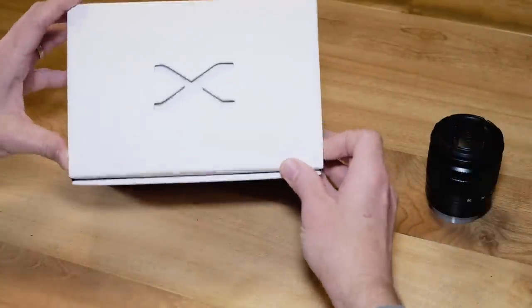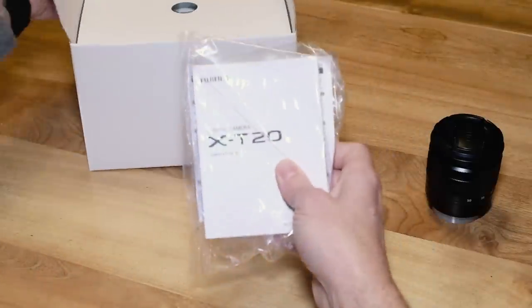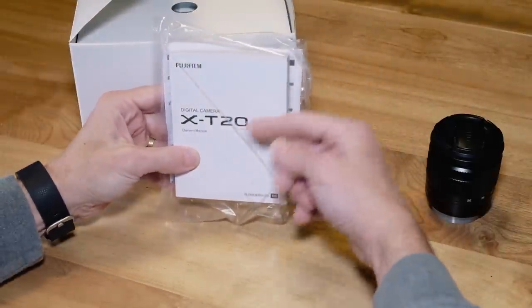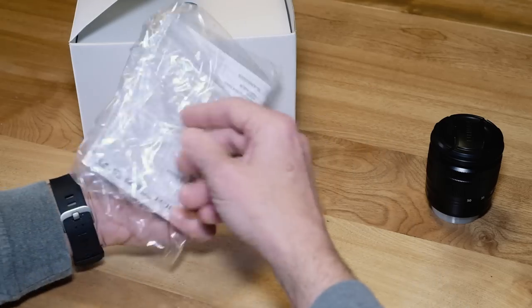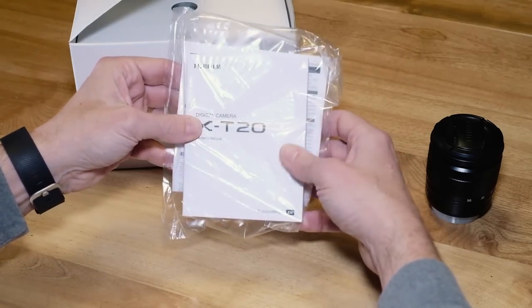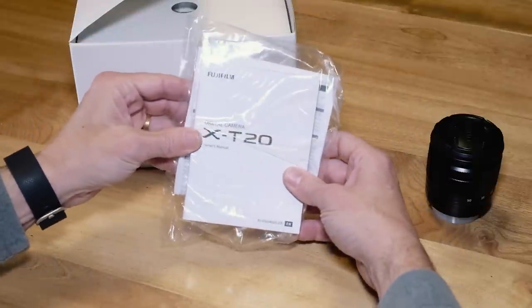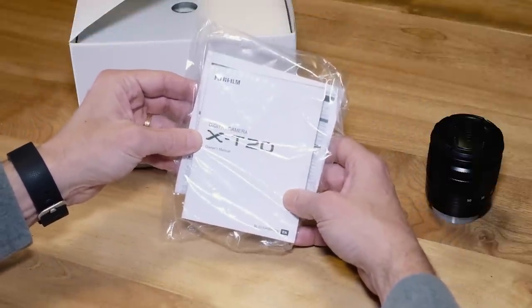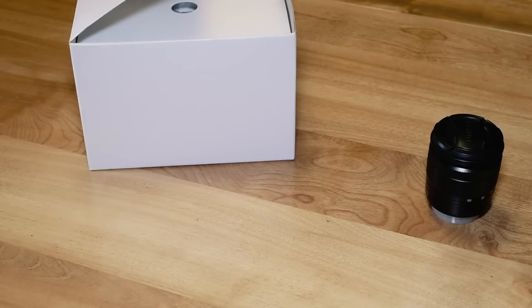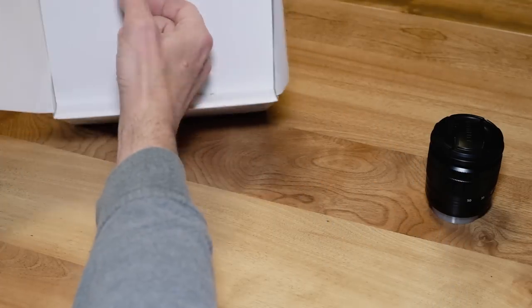Opening up the camera box you'll find an instruction manual. Depending on your region this will have different languages on it. Included in here as well is some warranty information and some extra information. It's always a good idea, especially as you're learning the camera, to keep the instruction manual close by so you can refer to it. I'm gonna put it to one side for the time being.